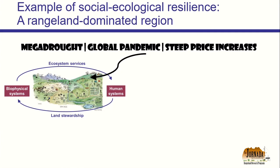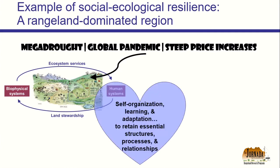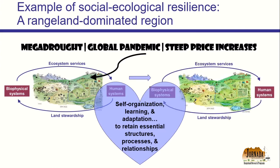But then a shock hits. In this example, the shock is mega drought, a global pandemic, and steep price increases of inputs for agriculture and other activities on rangelands. We're hit with this shock and we say to ourselves: we like our state of affairs, so we're going to work toward resilience. We work toward self-organization, learning, and adaptation so we can retain the essential structures, processes, and relationships in our social ecological system.